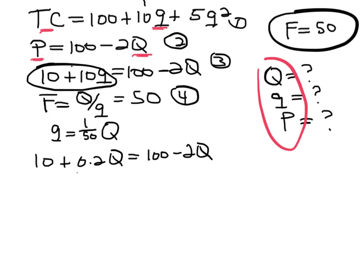We can solve for big Q: Q equals 41. And now we can take big Q and put it into the price equation to find the actual price. The actual price is going to be $18, about $18.